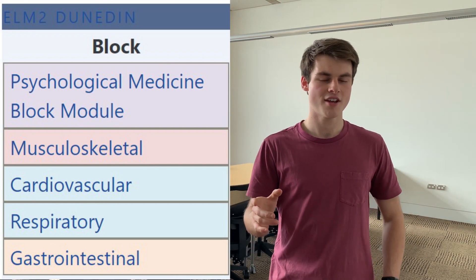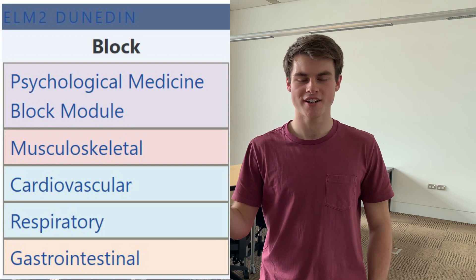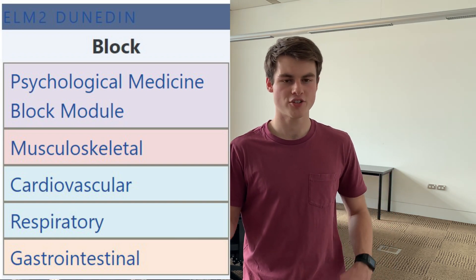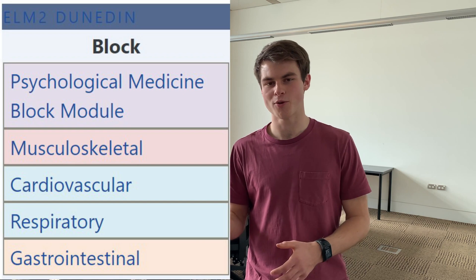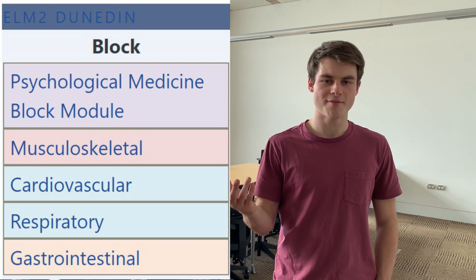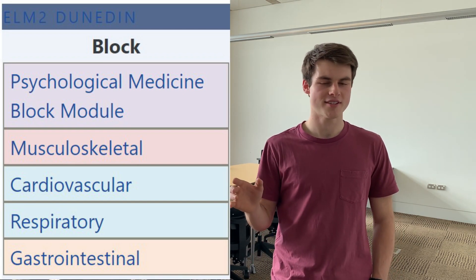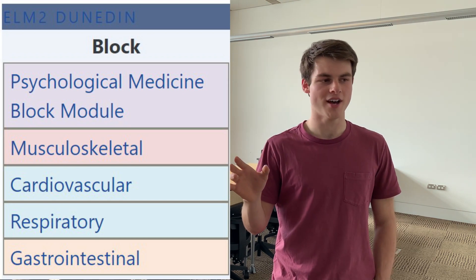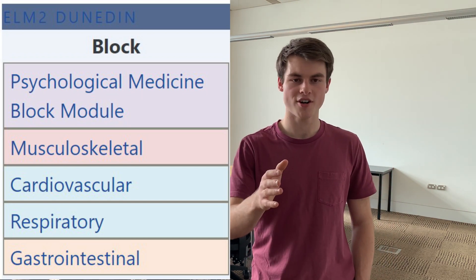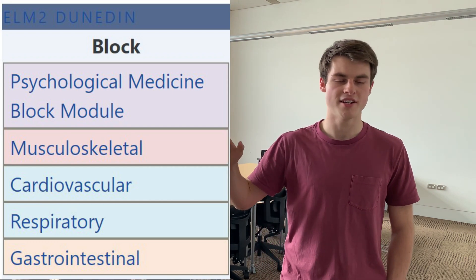Block modules — also known as horizontal modules — are based on body systems, and their teaching is done in a chunk at one point in the year, instead of throughout the whole year. This is a lot like the way HUBS 191 and HUBS 192 are taught. They focus on anatomy and physiology, except for psych med which is a bit of an outlier.